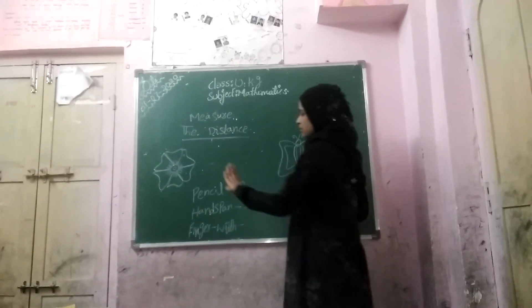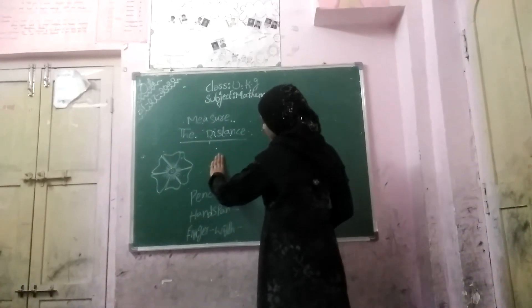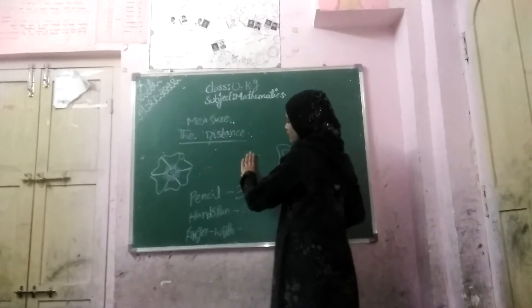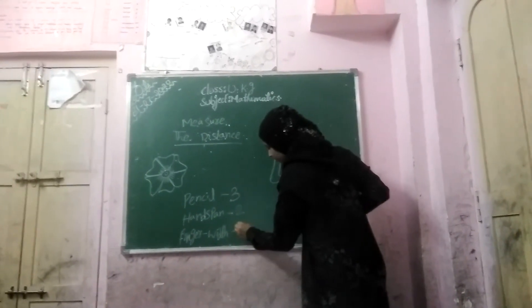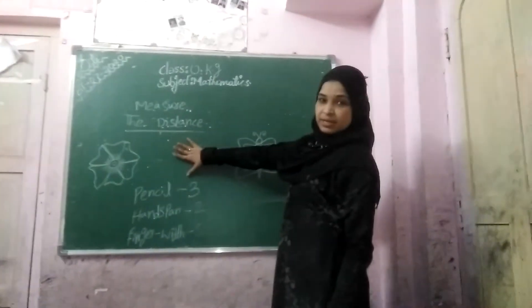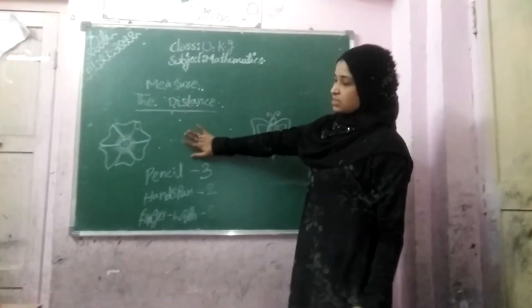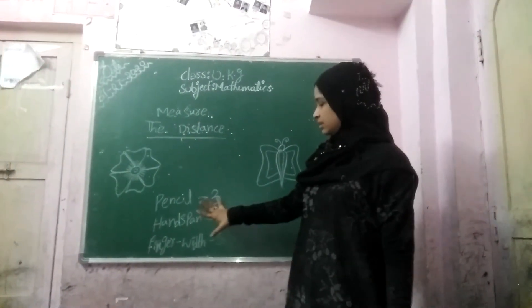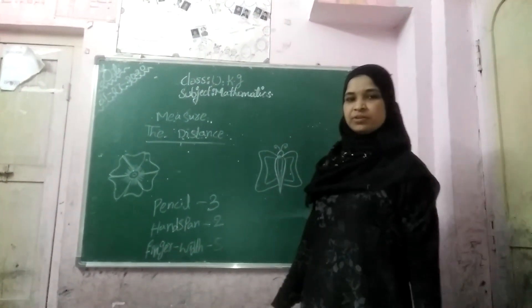Finger width: 1, 2, 3, 4, 5. Ok children, 5. These are measure the distance. These are words. Writing the 5 items. Write. Thank you children.